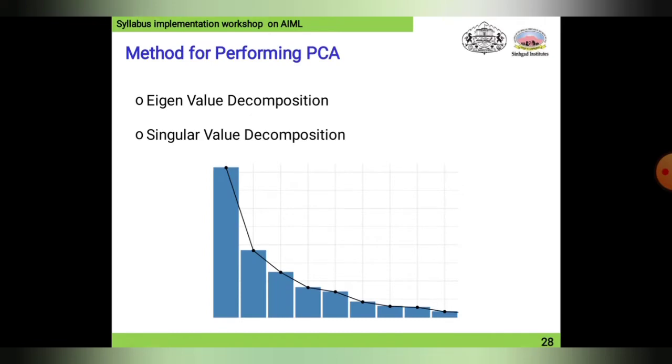Methods for performing PCA: Eigenvalue Decomposition and Singular Value Decomposition. We can see a bar chart is plotted consisting of eigenvalues. This may be plotted with the help of straight lines, and you can see these are in decreasing order. This is how PCA can be plotted.